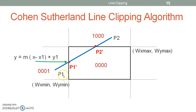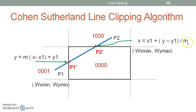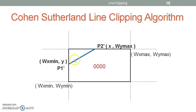Similarly, we calculate the coordinates for P2' using: x = x1 + (y − y1) / m, where m is the slope, y = wy_max, and (x1, y1) are the coordinates of P2, giving the actual x coordinate of intersection point P2'. After calculating the intersection point coordinates, the line is clipped and only the portion between P1' and P2' is displayed. P1' has coordinates (wx_min, y) and P2' has coordinates (x, wy_max).